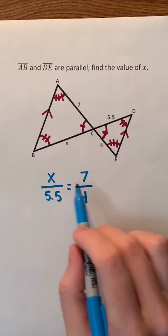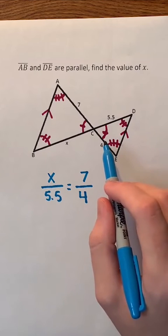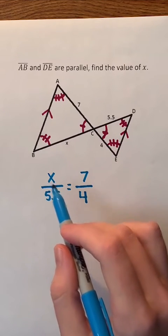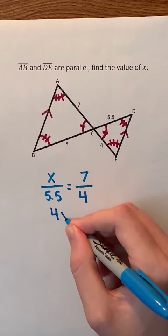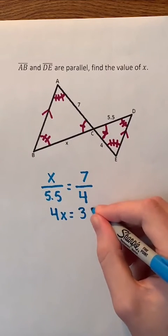Notice that the numerators represent the triangle on the left and the denominators represent the triangle on the right. Now, we can solve for X by first cross multiplying. X times 4 is just 4X. 5.5 times 7 is 38.5.